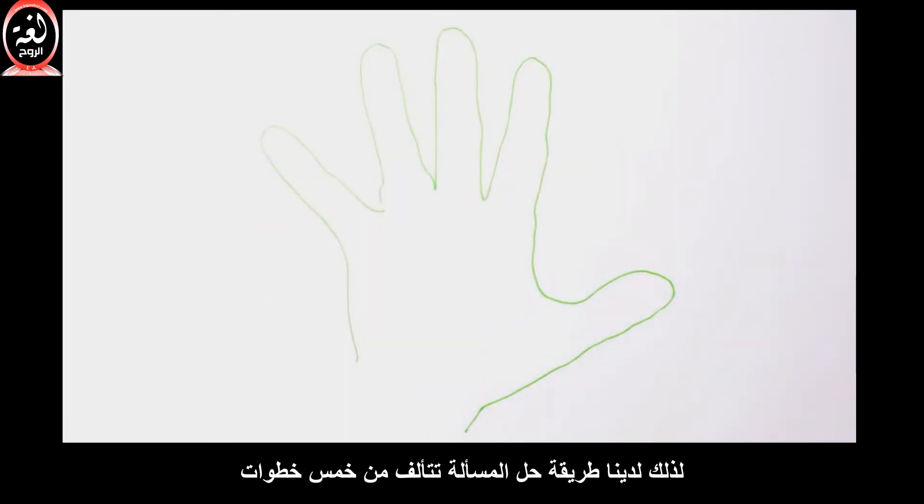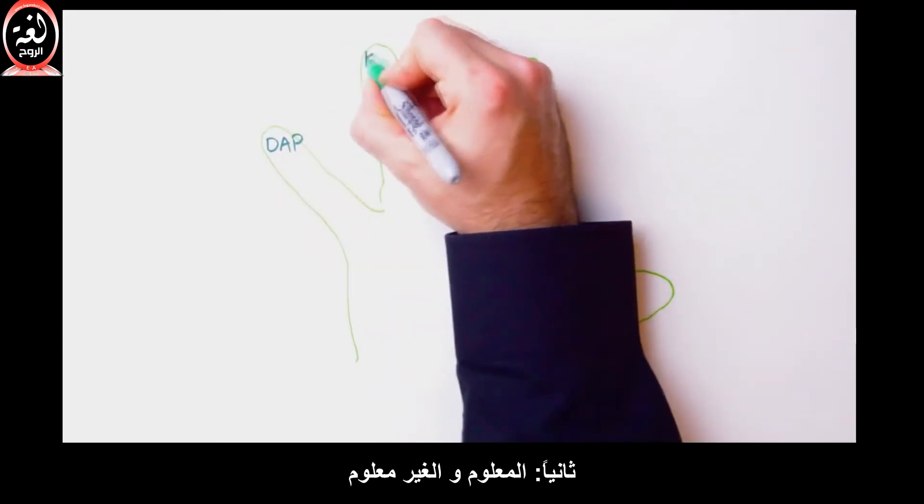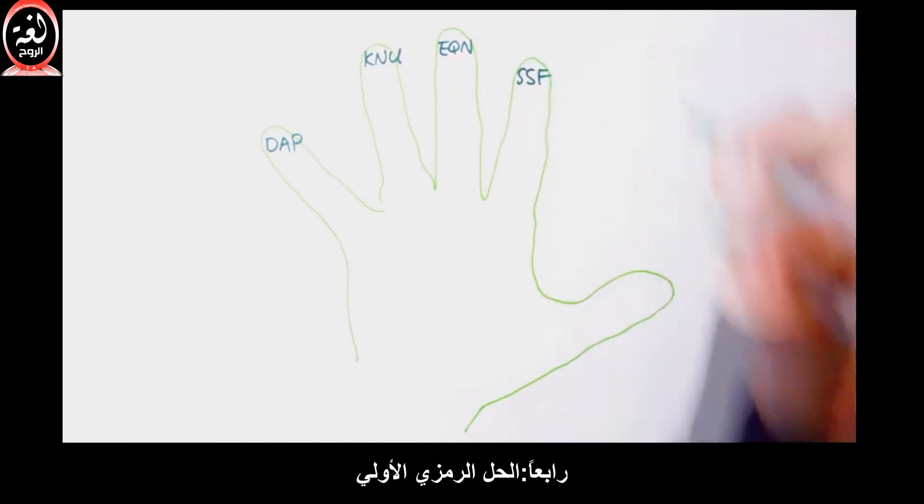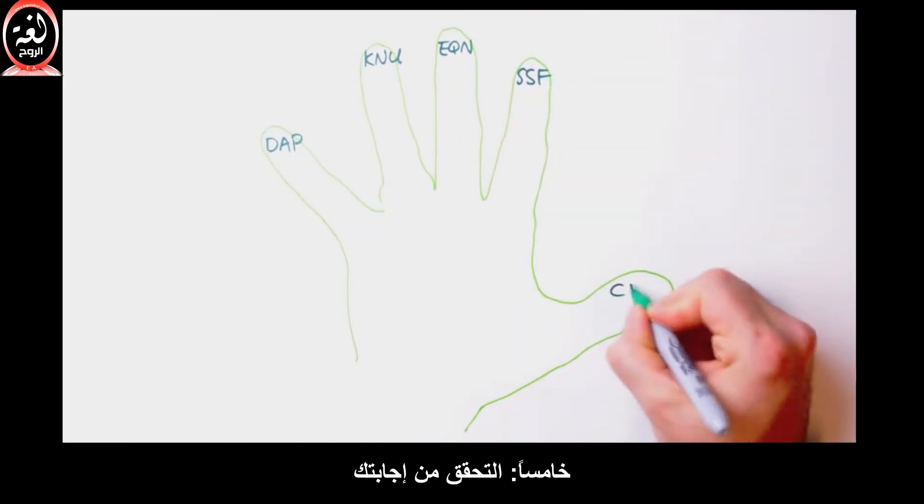So our problem-solving method comprises five steps. First, draw a picture. Second, knowns and unknowns. Third, equation. Fourth, solve symbolically first, and fifth, check your answer.